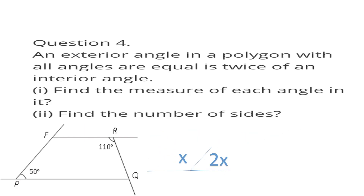Question number 4. An exterior angle of a polygon, where all angles are equal, is twice the interior angle. Find the measurement of each angle. Find the number of sides.